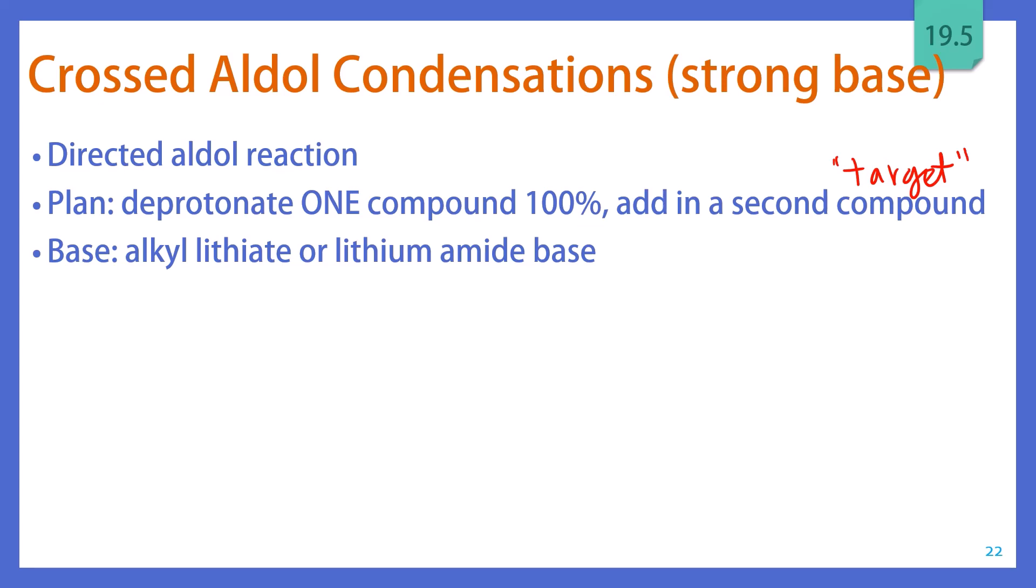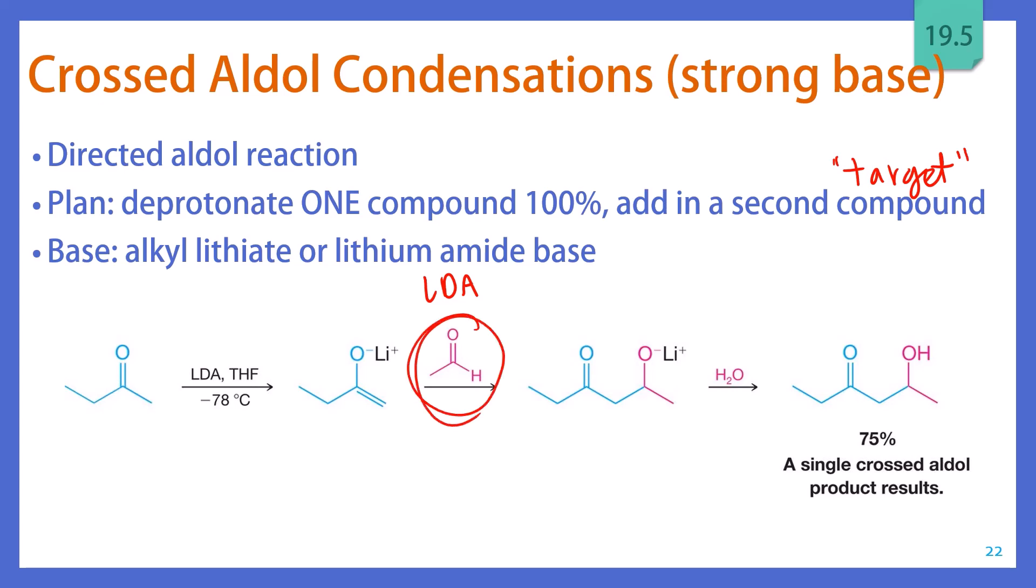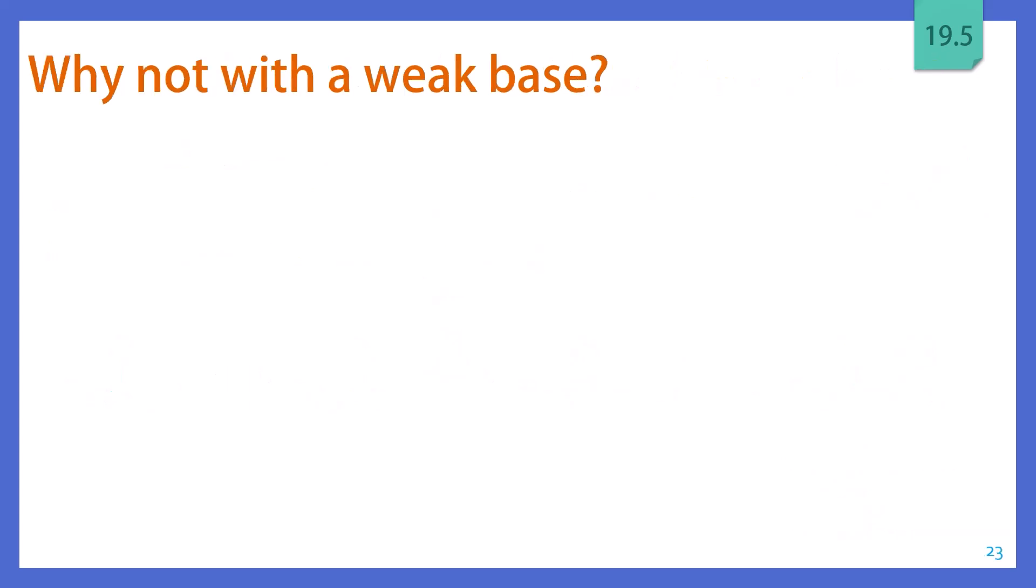The base that you're going to use here needs to be strong, such as an alkyllithiate or a lithium amide base, such as LDA. So an example scheme here would be to take 2-butanone and add in LDA and THF, low temperature, so that it doesn't end up trying to attack itself or anything. And you add in your target molecule. And then work it up with water, aqueous acid, or acid and heat if you're trying to go through a condensation. And this would be the addition product. So the benefit to using LDA is that you are able to take compounds that have multiple alpha protons and react them with other compounds that also contain alpha protons without worrying about multiple products forming.